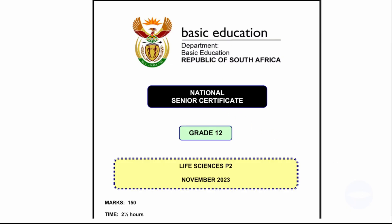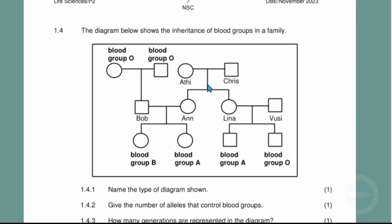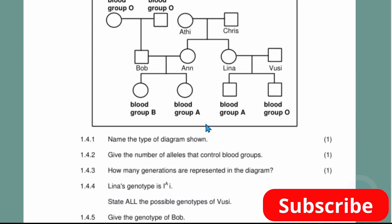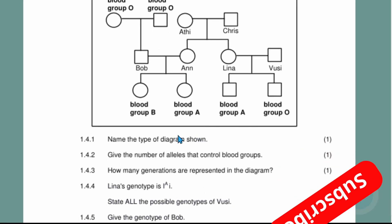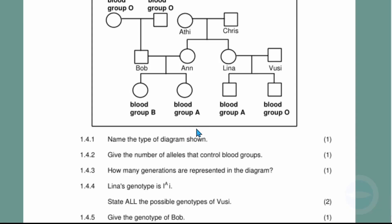Here is the question. The question paper was written in November 2023 and is for Life Sciences Paper 2, number 1.4. It's a pedigree diagram. If you want to answer the questions before you see the solutions, you can stop the video here and try to answer. I will show you the memorandum before the end of this video. So without wasting more time, let's get to it.